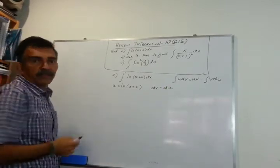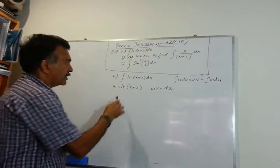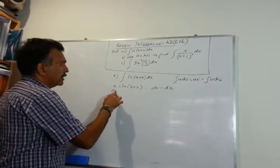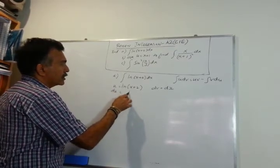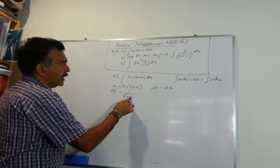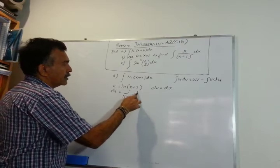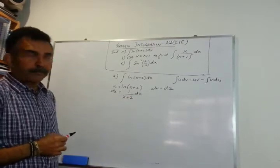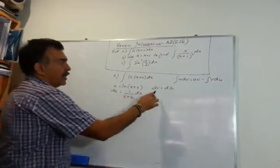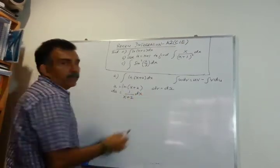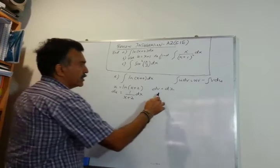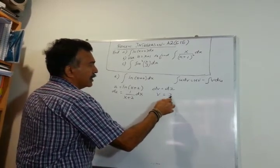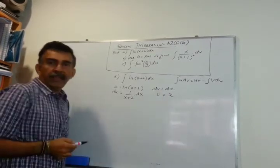On this side we have to differentiate, so we can write du equals 1 over (x+2) dx. On this side we have to integrate, so v equals x.